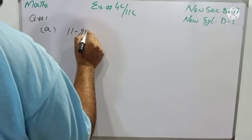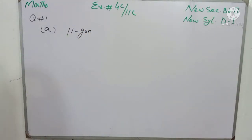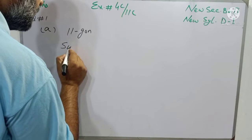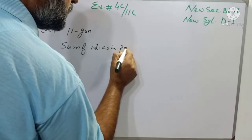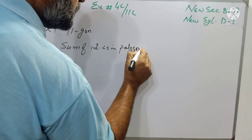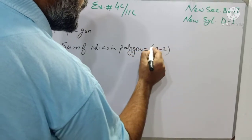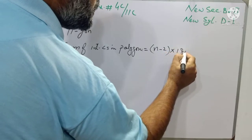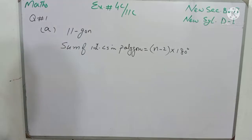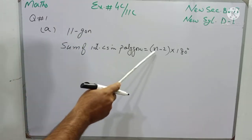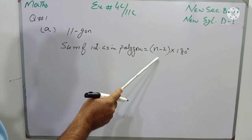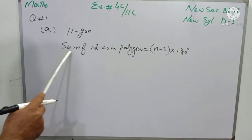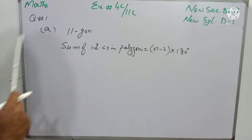There is a polygon that has 11 sides, and we have to find the sum of the interior angles. Keep in mind that there is a formula: sum of interior angles in a polygon is equal to (n minus 2) into 180 degrees. Here we have an 11-sided polygon, so in place of n we will put 11, subtract 2 from 11, then multiply the answer by 180. That will be the sum of the interior angles of the 11-sided polygon.